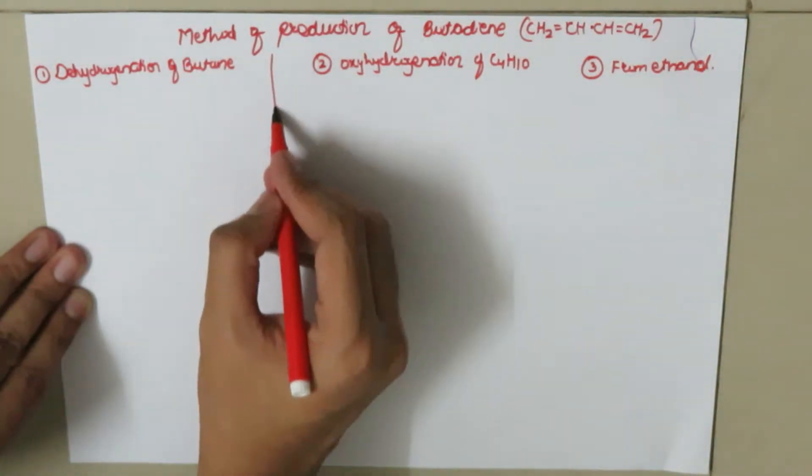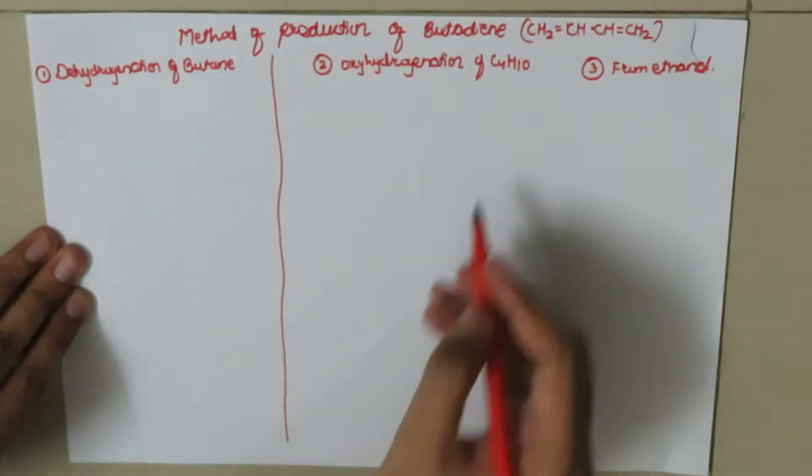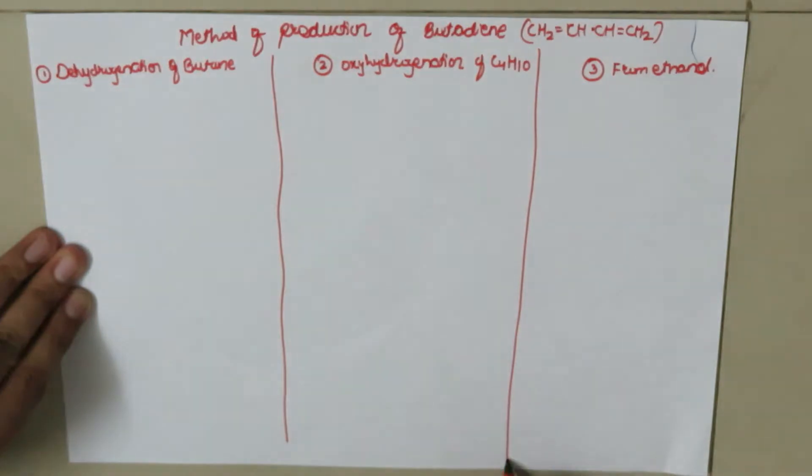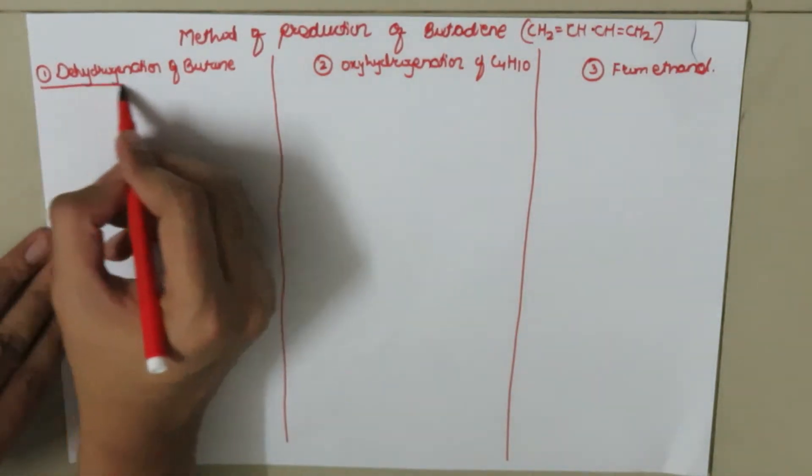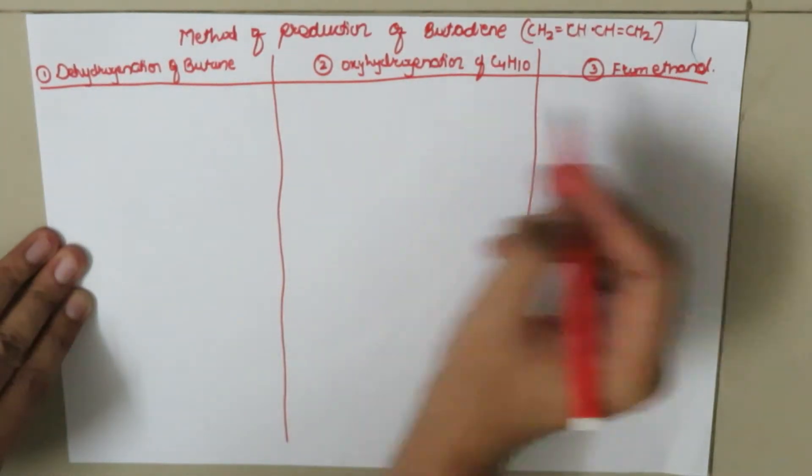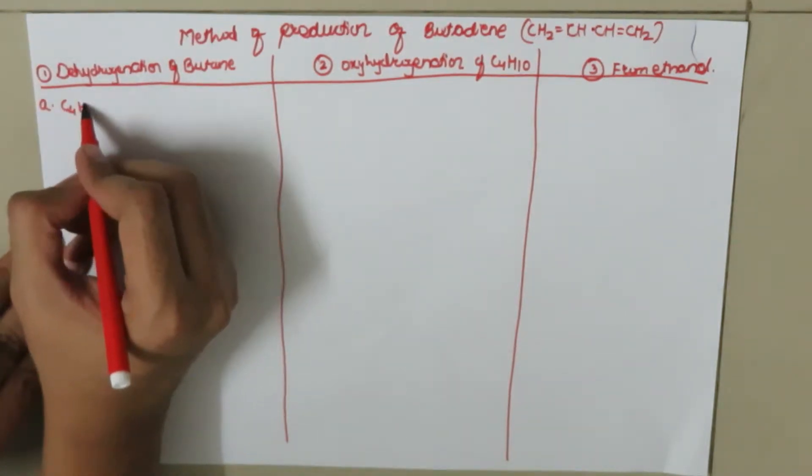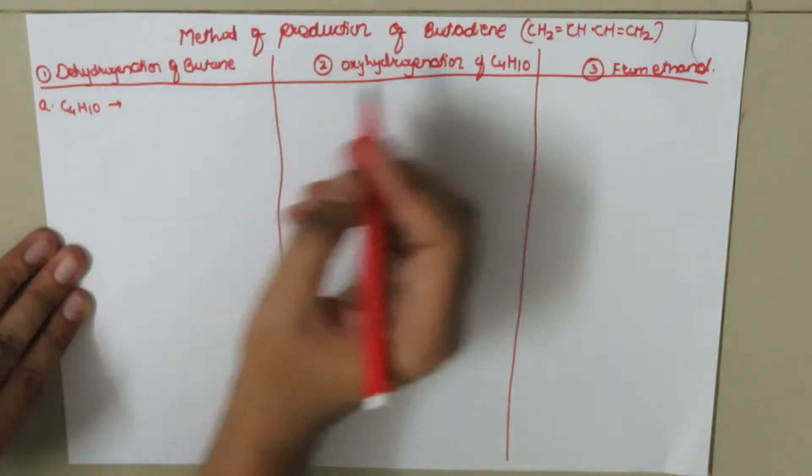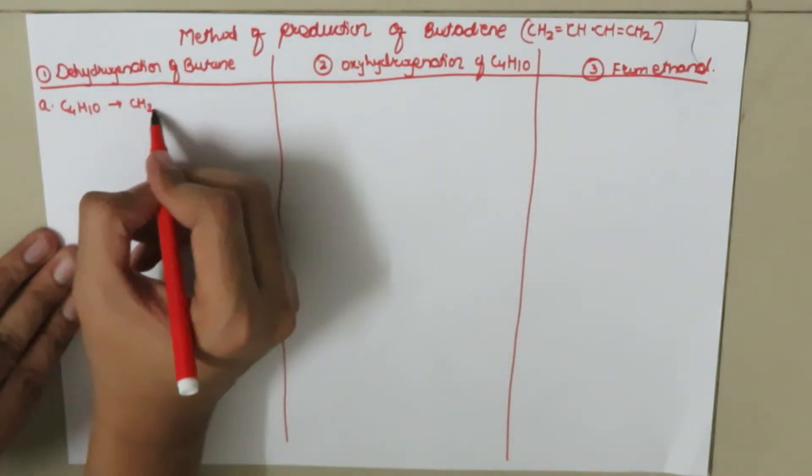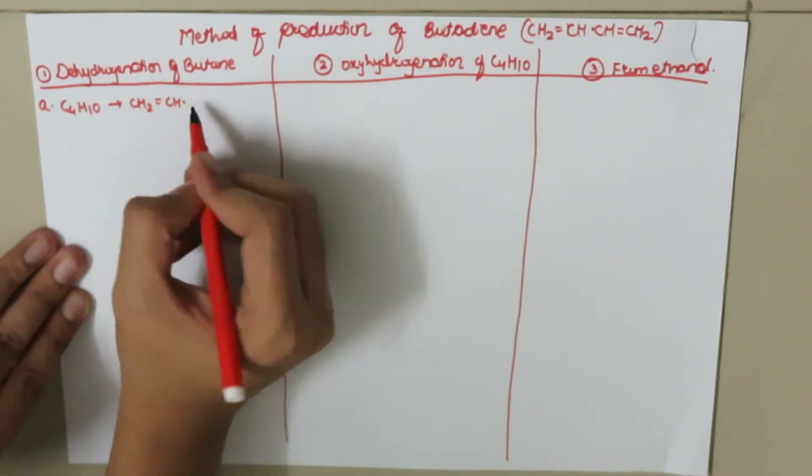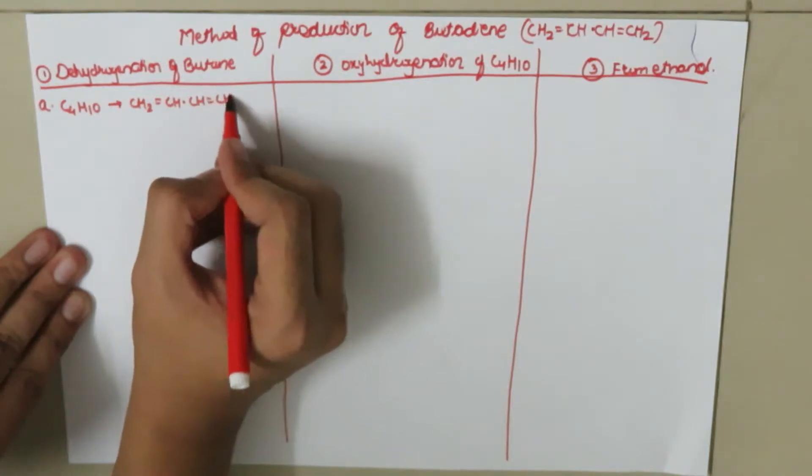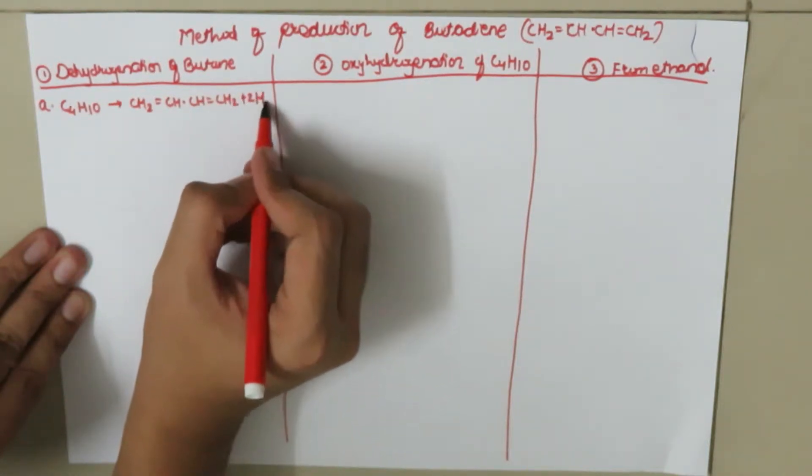Now we are going to find the difference between these three processes. The first point of differentiation is the reaction itself. So butane, C4H10, will give us butadiene CH2=CH-CH=CH2 plus 2H2.